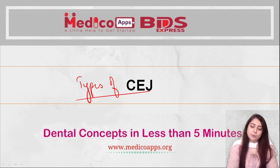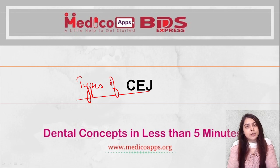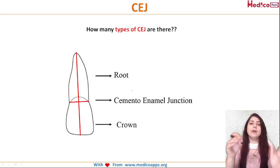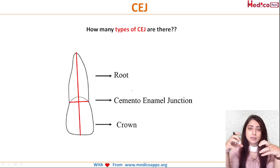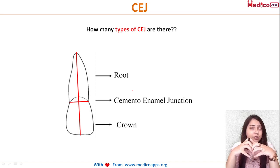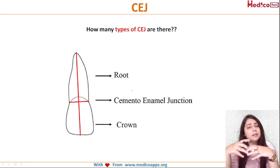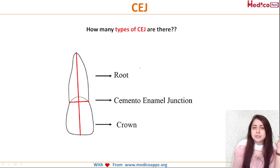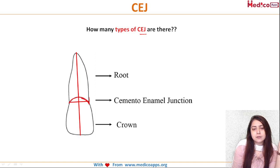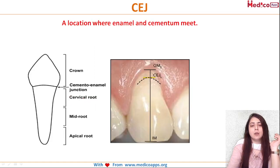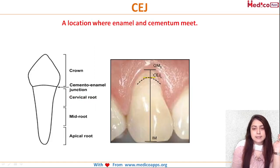What is CEJ? We all know that the CEJ is the cemento-enamel junction — where cementum meets the enamel, this portion is known as the cemento-enamel junction. By the name itself it is clear. This is the root, this is the crown, and this region is the cemento-enamel junction.